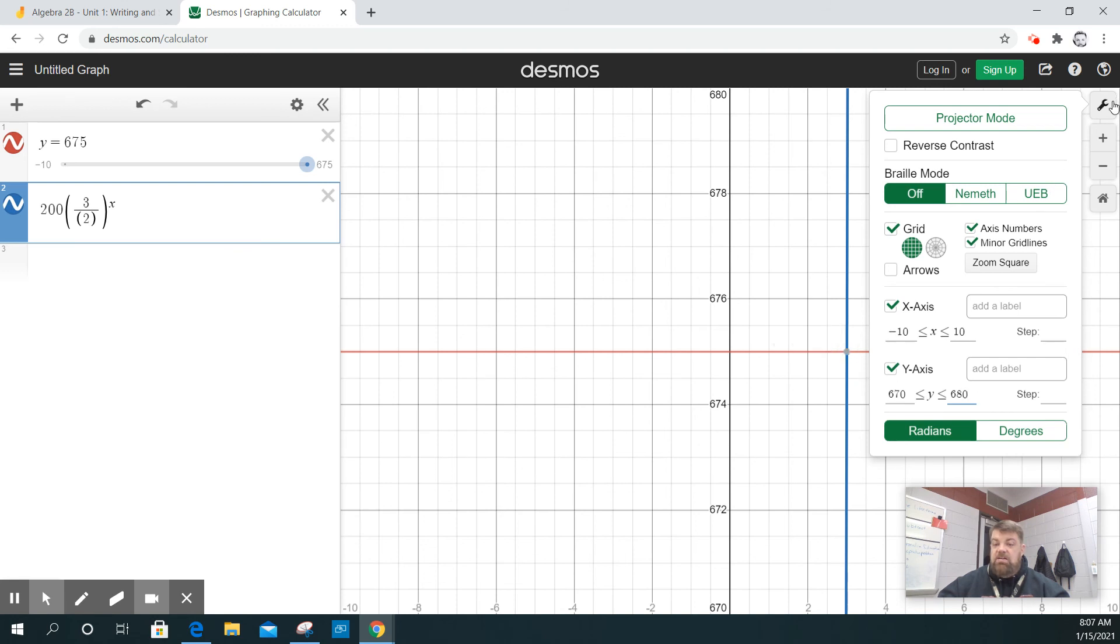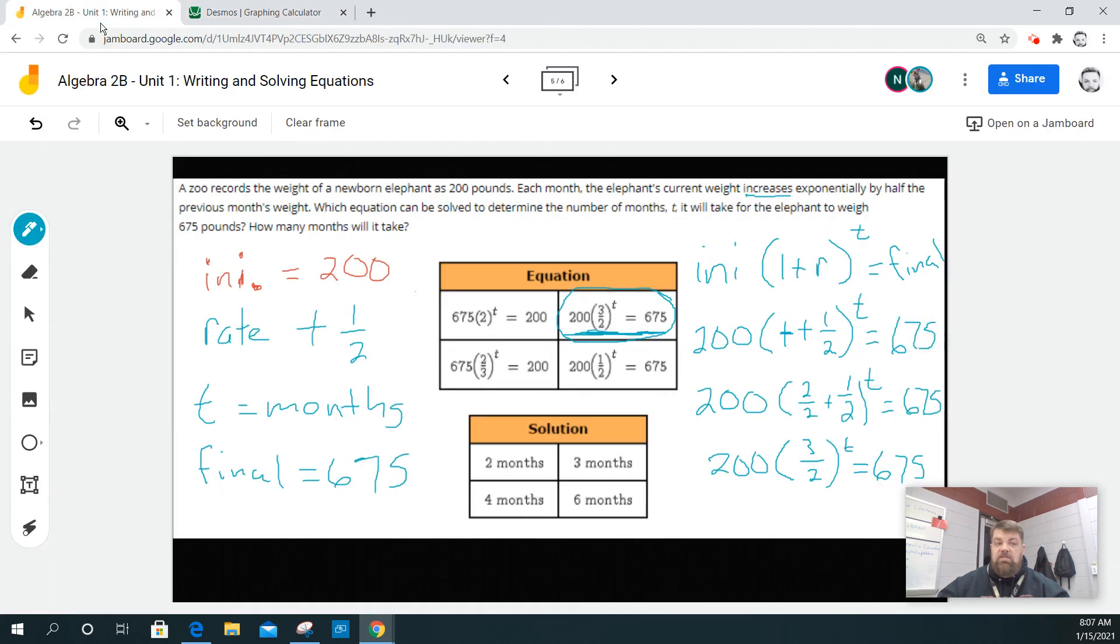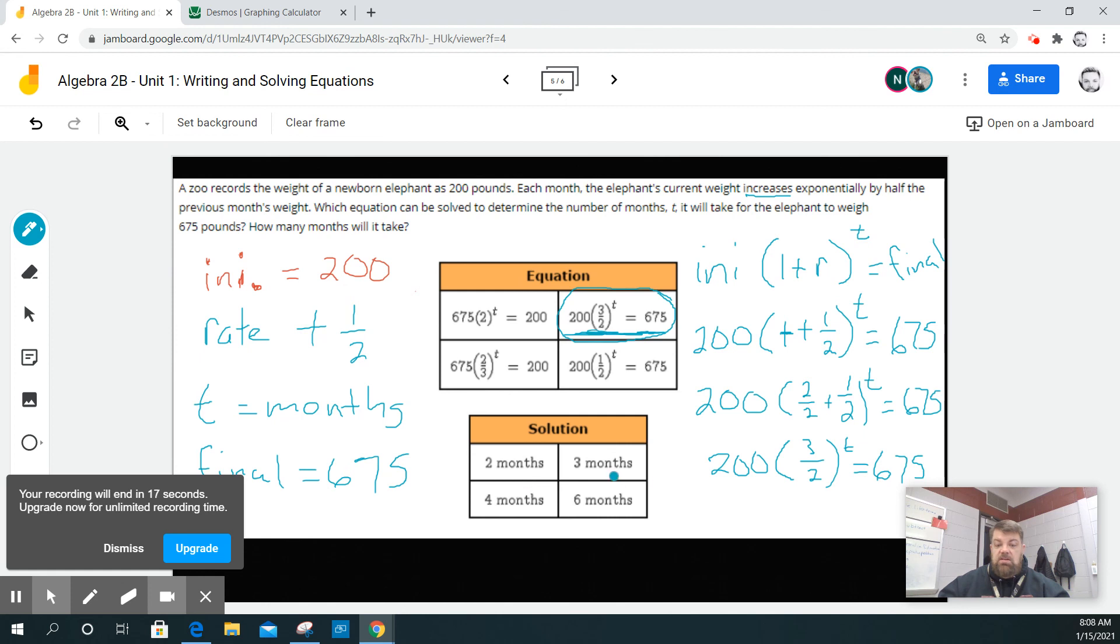Now, this little dot here, that's the intersection. Okay? So when T equals three, Y equals 675. So that means three months. Okay? In other words, if I plug in three for here, I'll get 675.